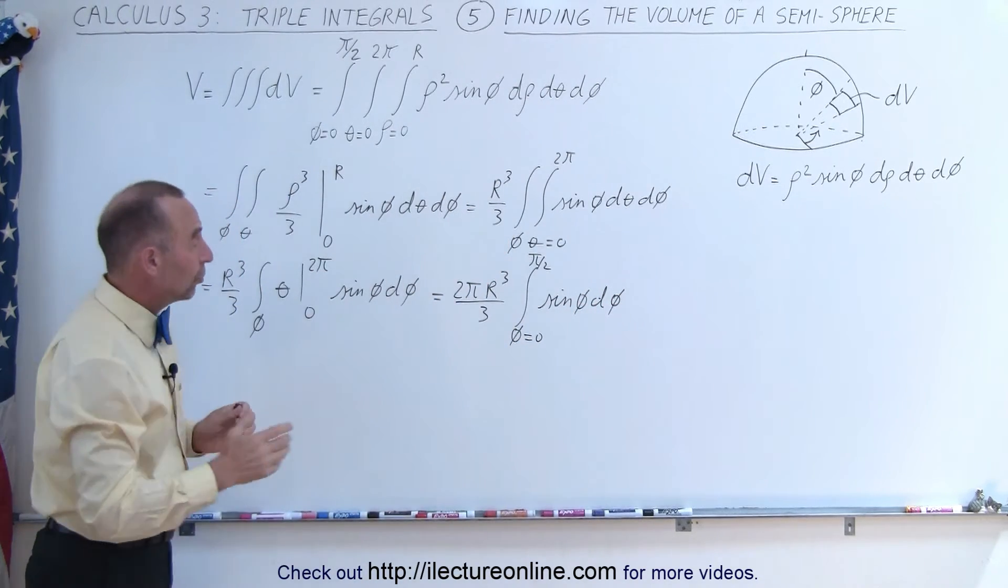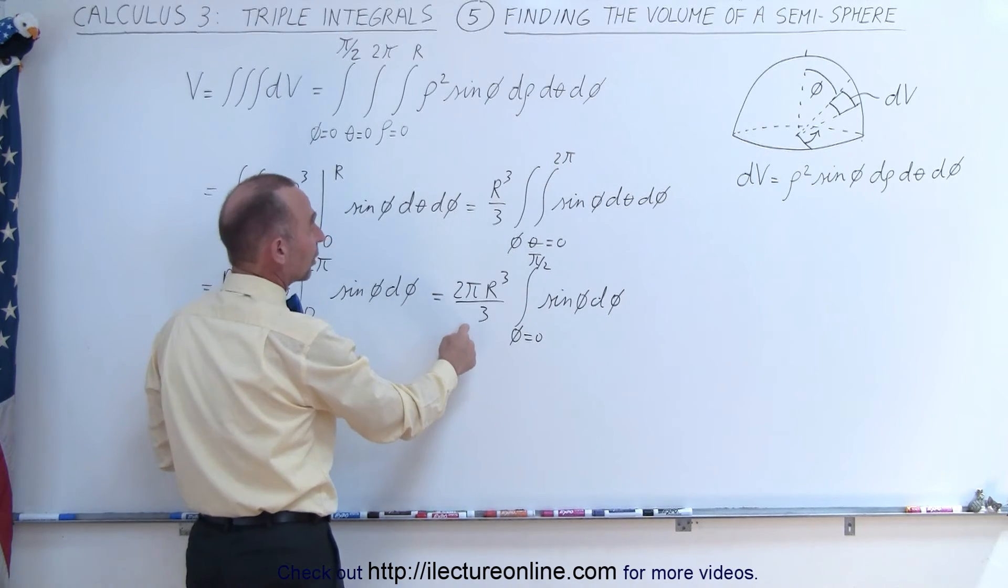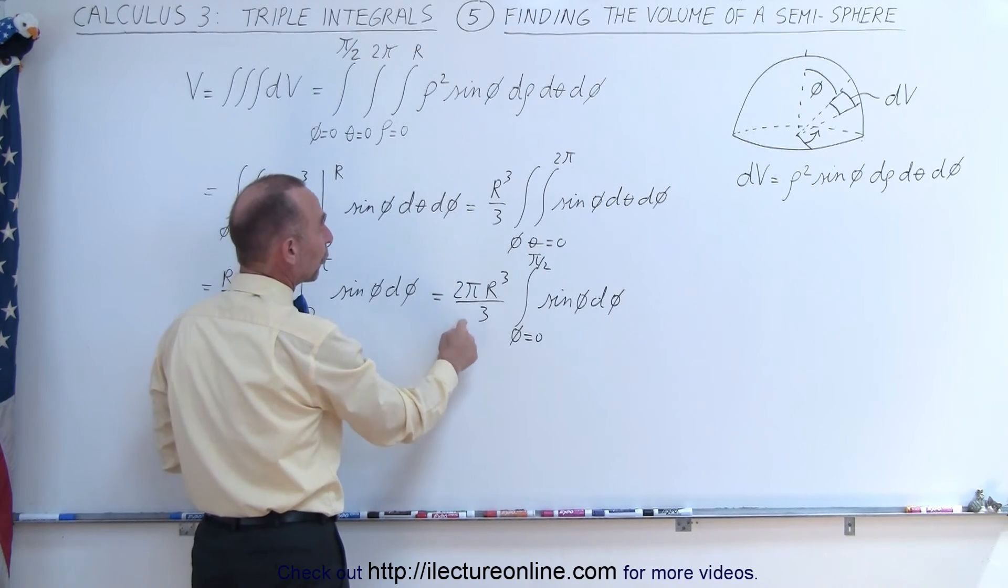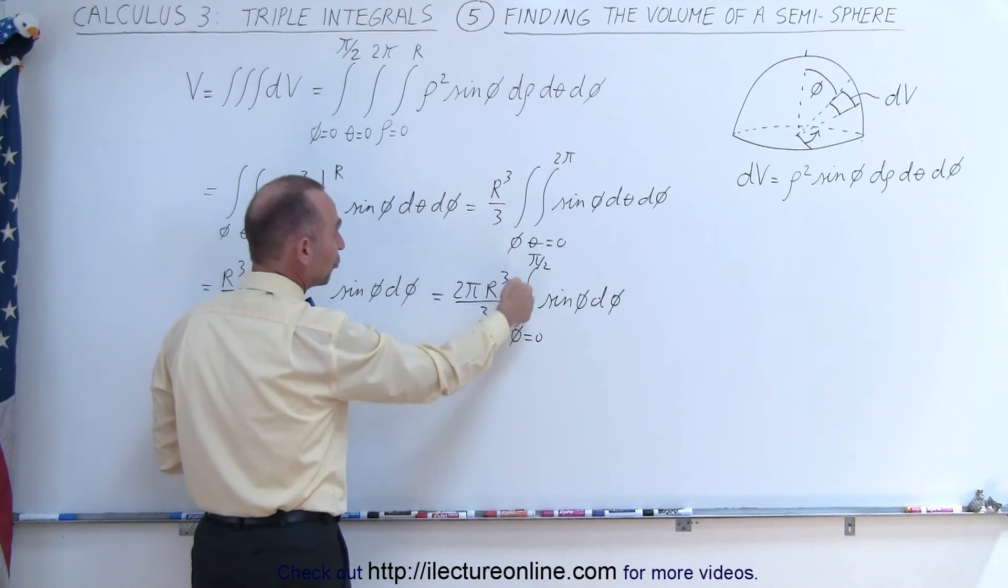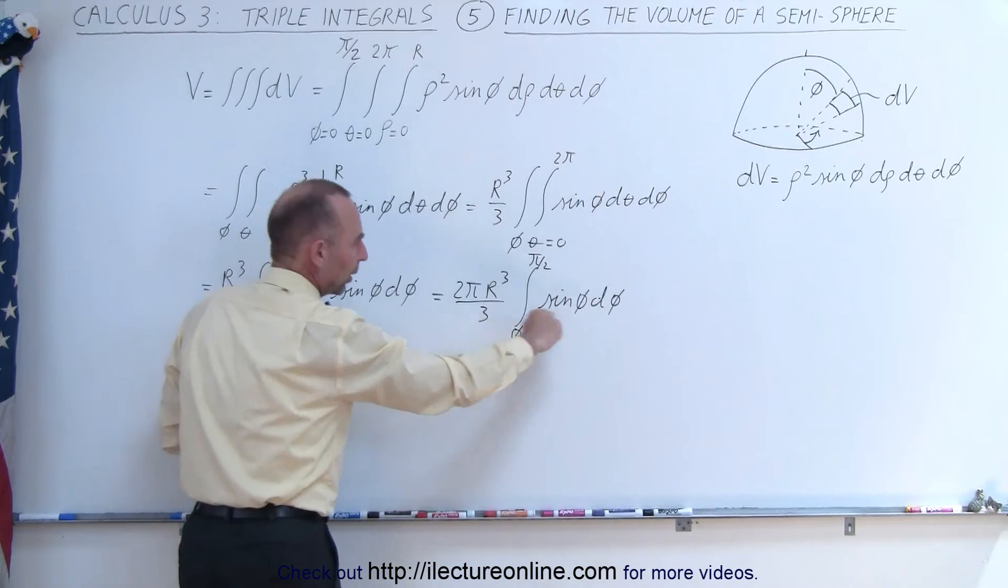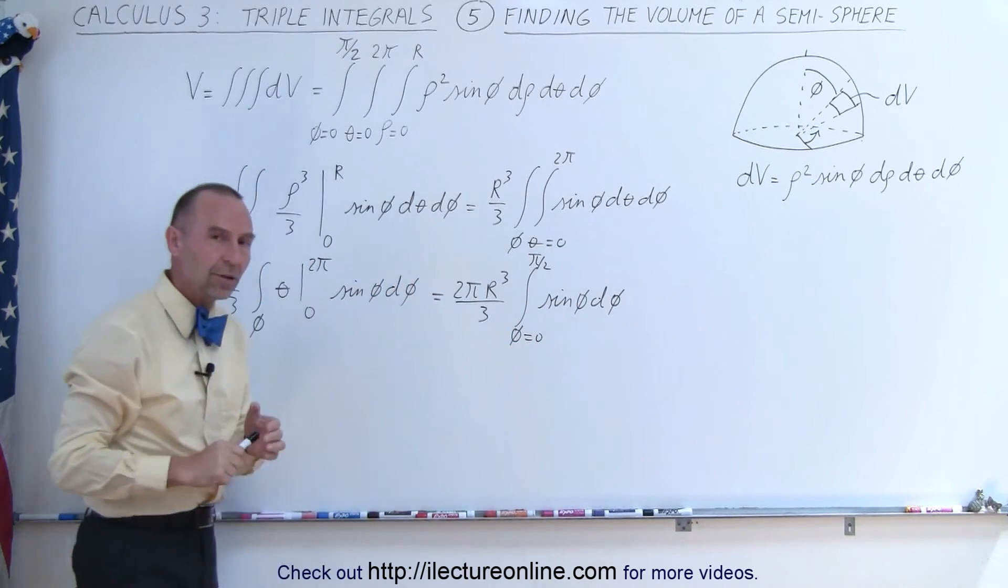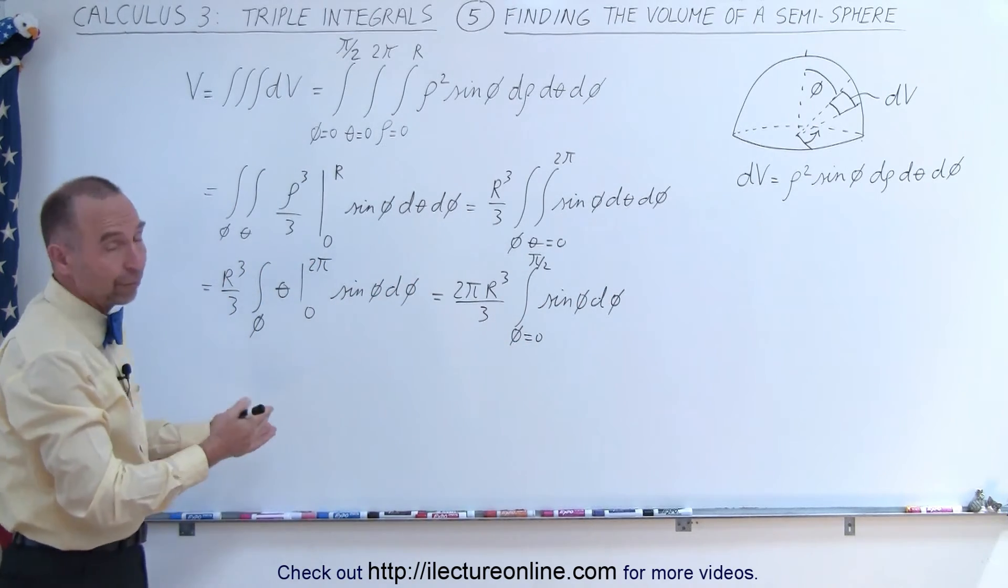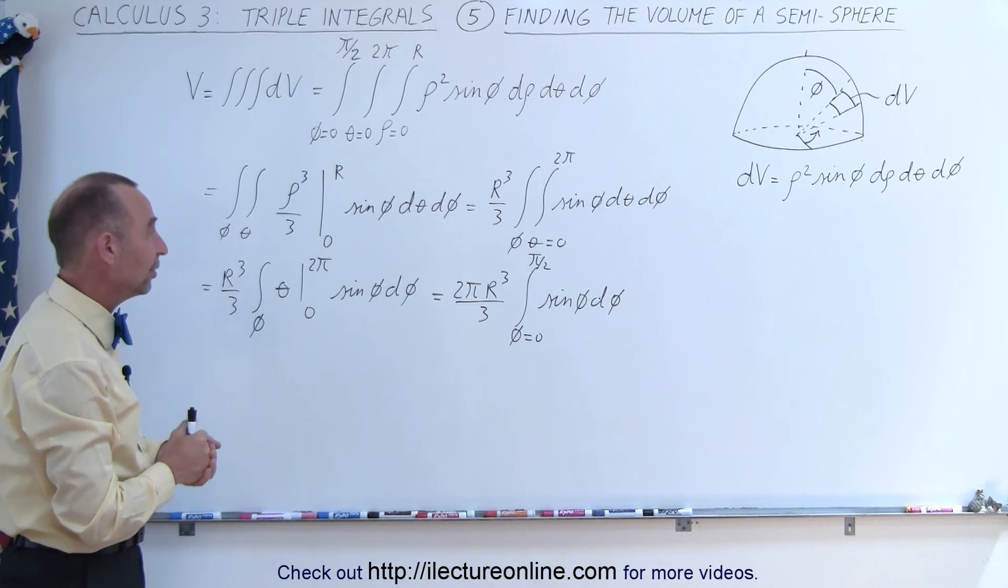And notice we're getting close. We know that the volume of a complete sphere is 4 thirds pi r cubed, and here we already have 2 pi r cubed over 3, which means this should be the answer. But what about this portion? We still have to continue with our third integral, and hopefully that will equal 1. Well, let's see if it does.